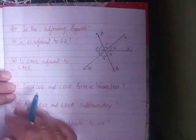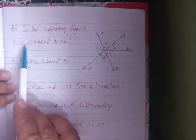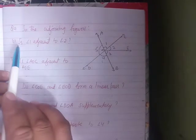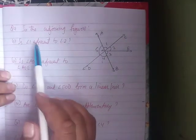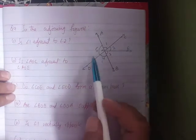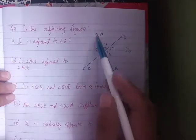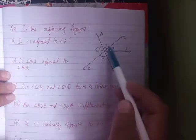Here is question number 9. In the figure, is angle 1 adjacent to angle 2? Angle 1 and angle 2 are adjacent angles. The edges and vertex determine whether angles are adjacent.